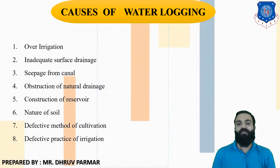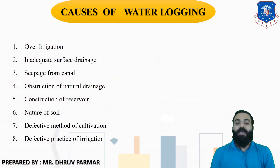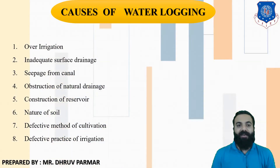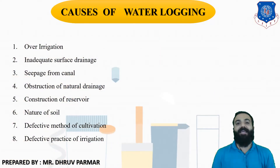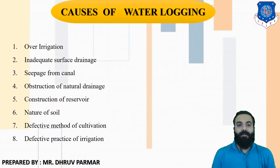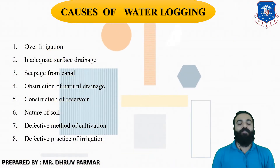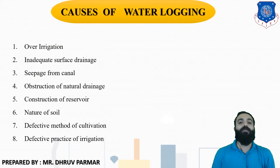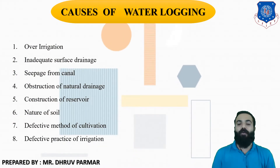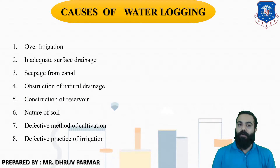The second cause is inadequate surface drainage. If a particular land does not have a drainage system, waterlogging will occur. A surface drainage system is very important to drain out the excess amount of water.